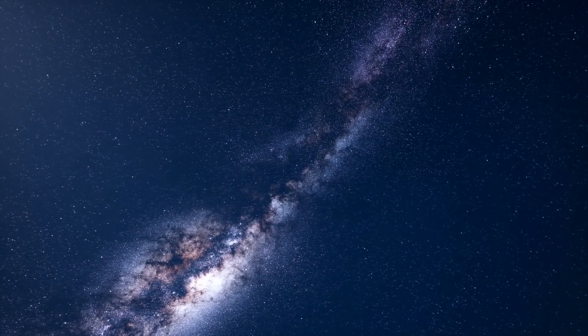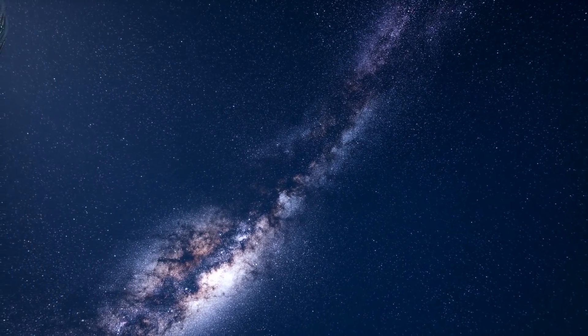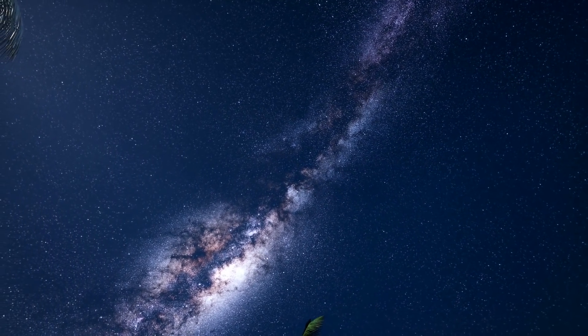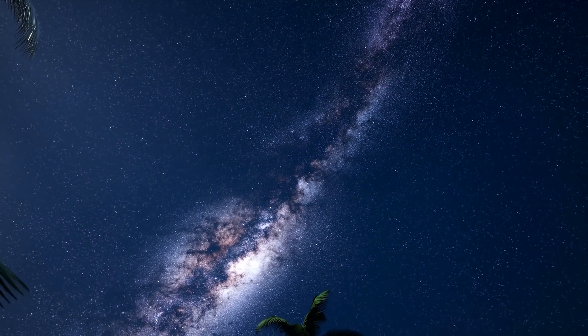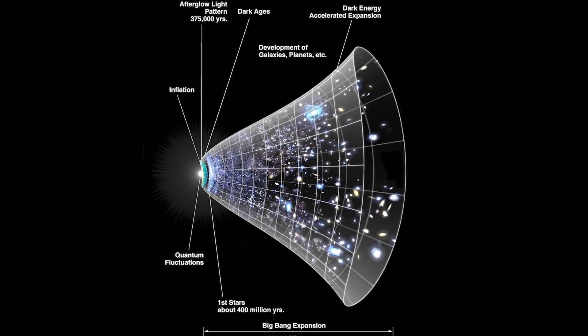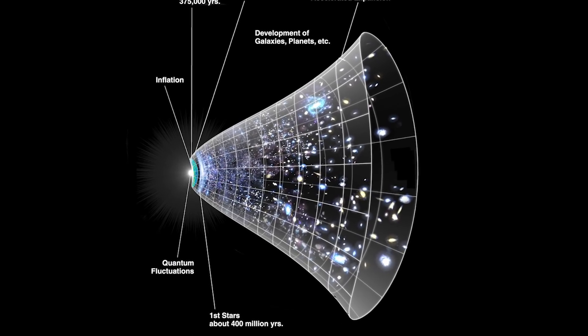And now a team of scientists seem to have changed things once again by using the most basic of sciences to figure out the potential shape of the universe. They looked at the light. Specifically, they looked at the cosmic microwave background, also known as CMB.